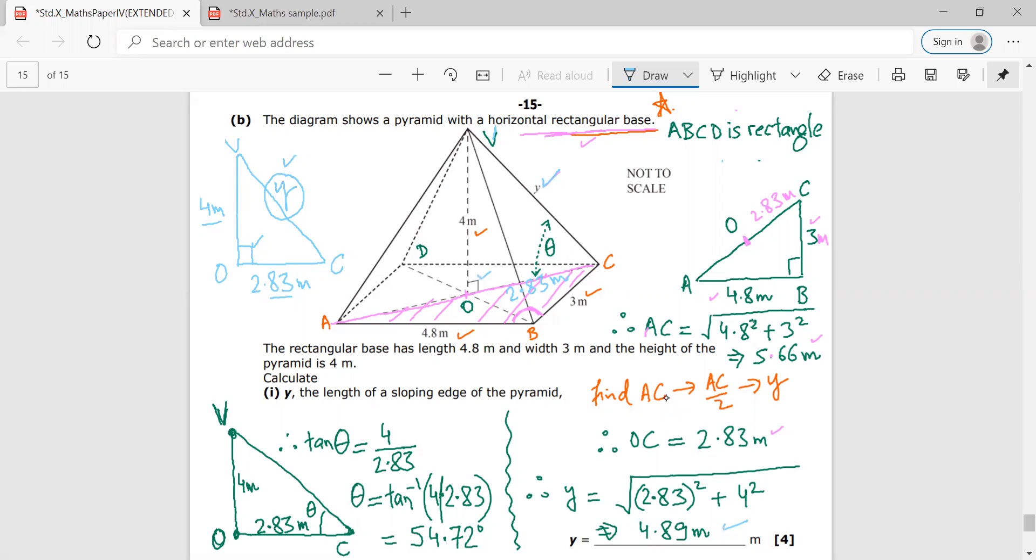in the same triangle VOC, I've been able to find the perpendicular, which is equal to 4 meters. So if I need this angle theta, this angle theta, this angle theta is this angle, the angle that the edge is making with the base. I need to find the tan inverse of 4 by 2.83. And the answer would be 54.72 degrees.